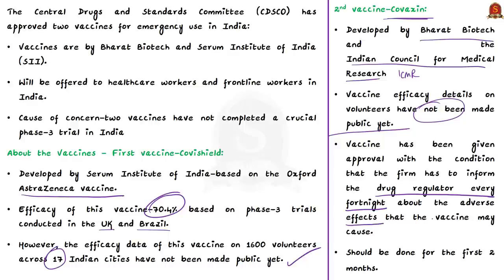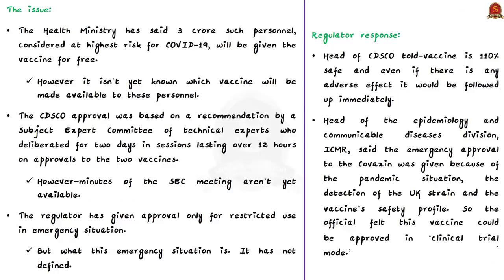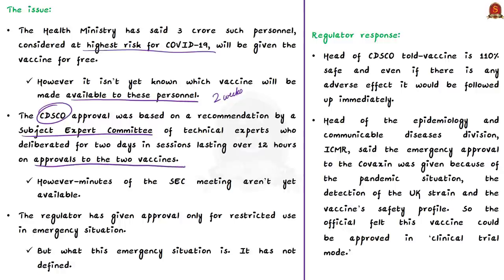Covaxin has been given approval with the condition that the firm has to inform the drug regulator every fortnight about adverse effects for the first two months. The health ministry has said that around 3 crore personnel considered at highest risk for COVID-19 will be given the vaccine for free, though it is not yet known which vaccine will be administered. The CDSCO approval was based on a recommendation by a subject expert committee of technical experts who deliberated for two days in sessions lasting over 12 hours. As per a health ministry press statement, the vaccine's efficacy in Indian volunteers was comparable to that in overseas trials, and the regulator has given approval for restricted use in emergency situations, though the criteria for emergency situation has not yet been clearly defined.